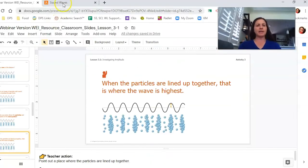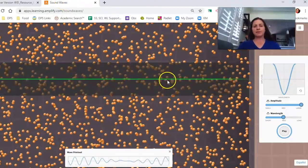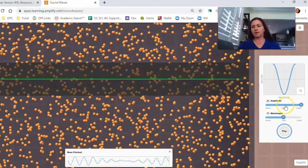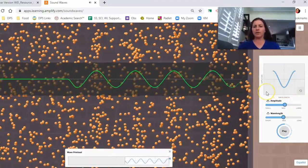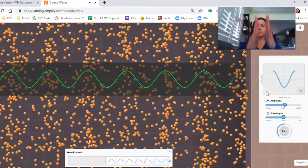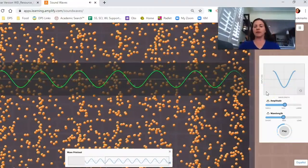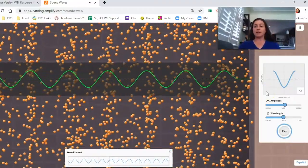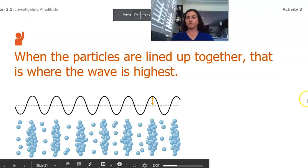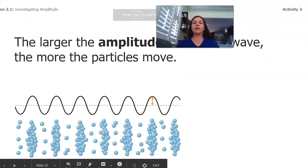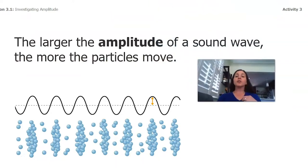It's pretty interesting how that happens. I wonder if we look back at the sim. This time, let's look at the particles. Oh yeah. If you follow the very tops of those waves, you can see the particles line up together, just like we saw in that diagram. That's pretty interesting. And so that leads us to a conclusion. The larger the amplitude of the sound wave, the more particles move.